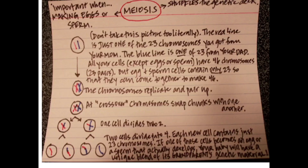Meiosis is a reduction division in which the chromosome number is halved from diploid to haploid, resulting in genetically different cells.